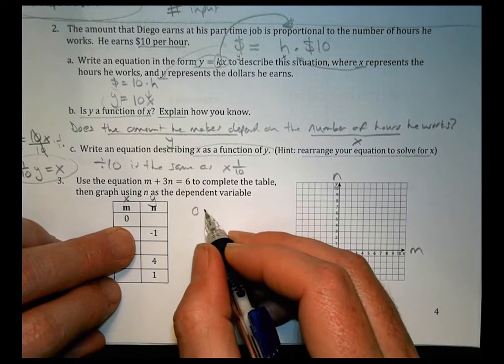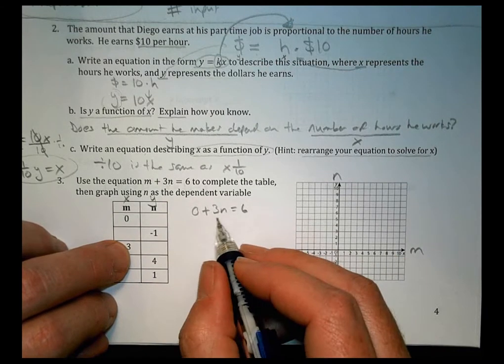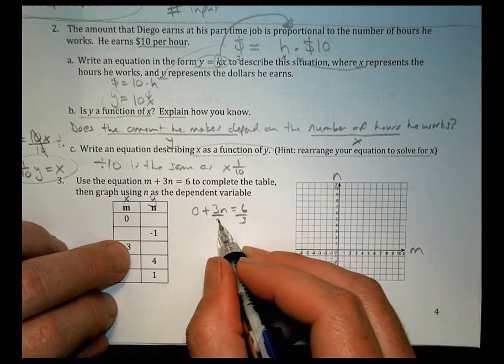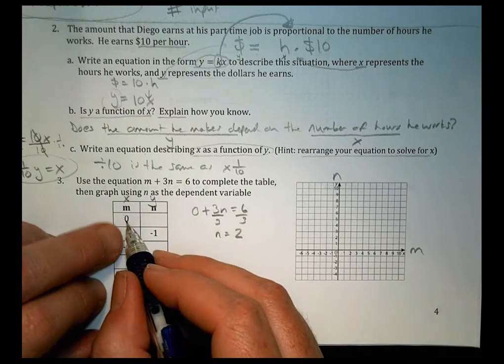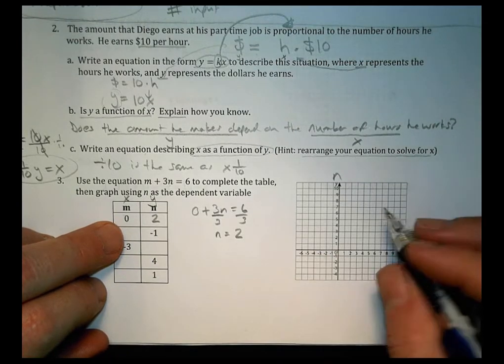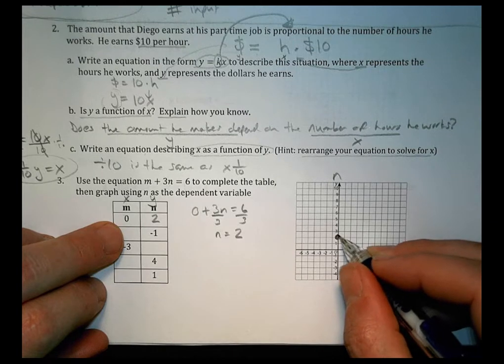We have, when M is 0, 0 plus 3N equals 6. So that becomes nothing. So we divide both sides by 3. And N equals 6 divided by 3 is 2. So when M is 0, N has a value of 2. And that's our first point. So 0, and then N becomes 2. We can put that right there.